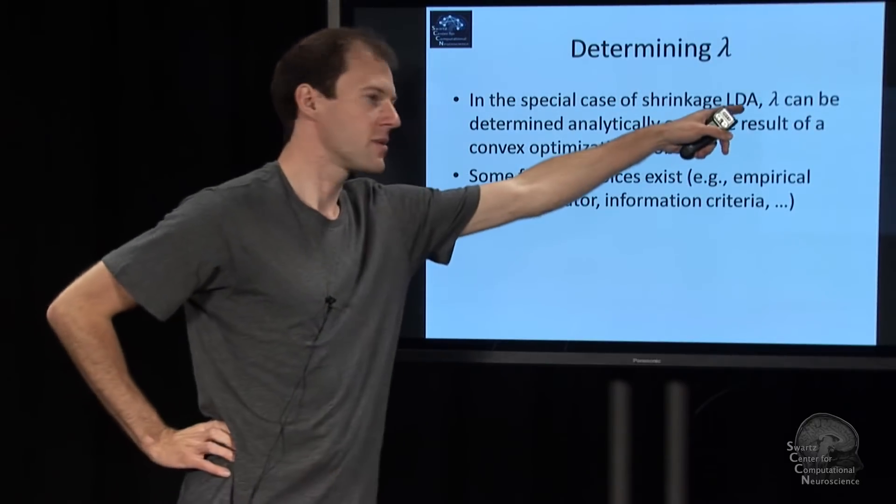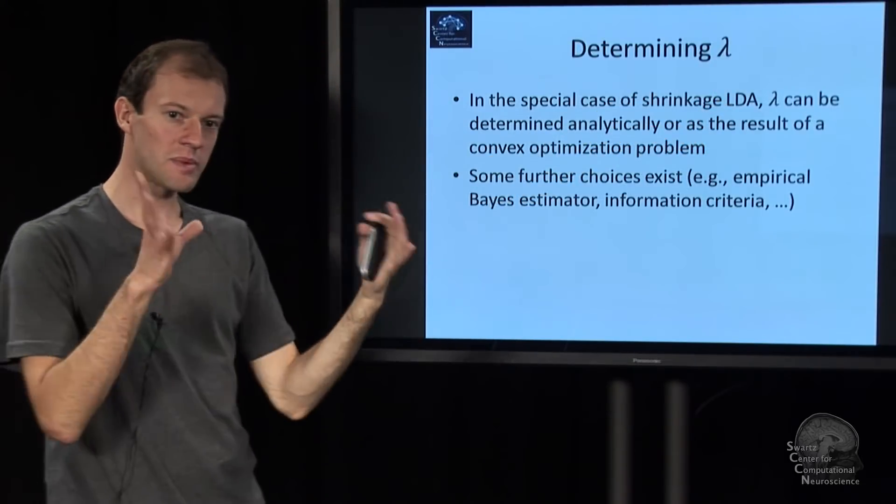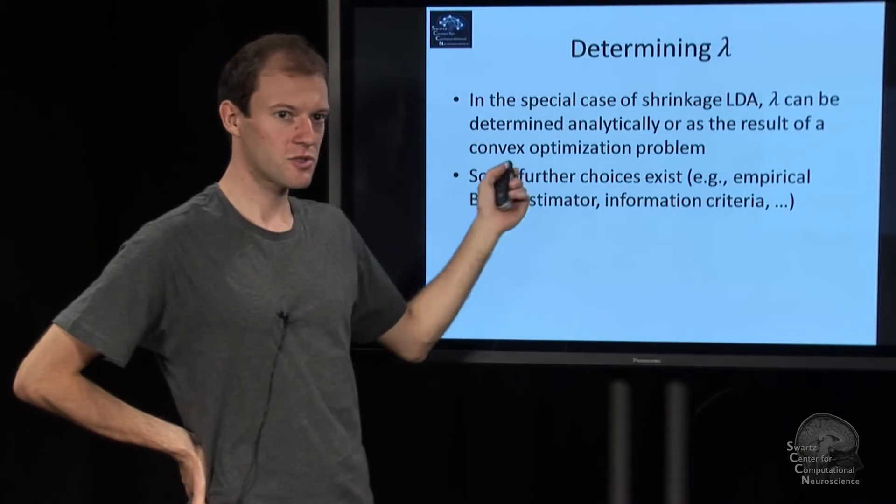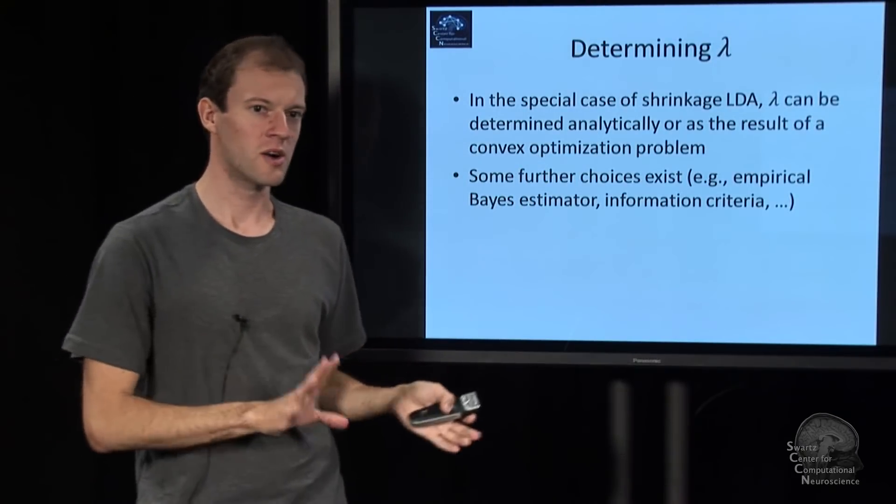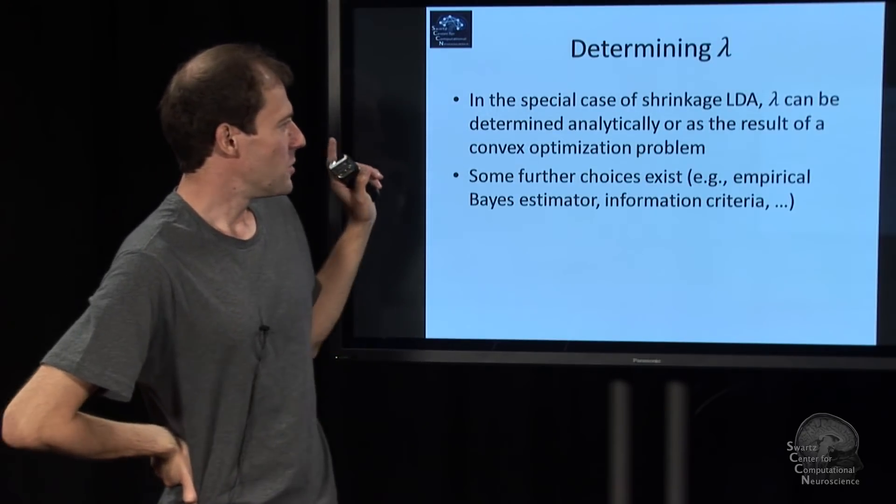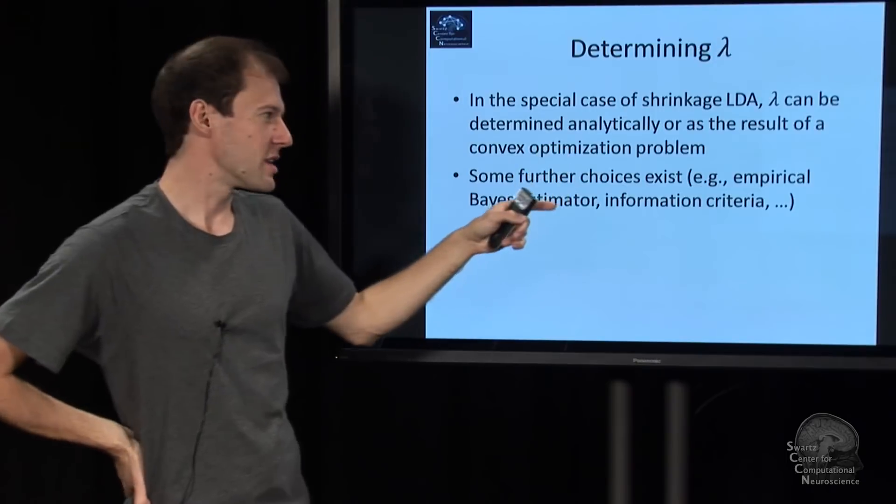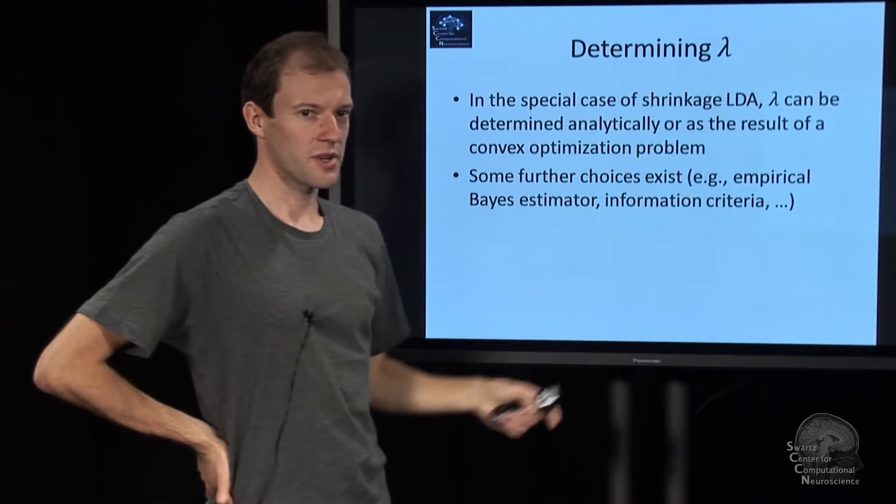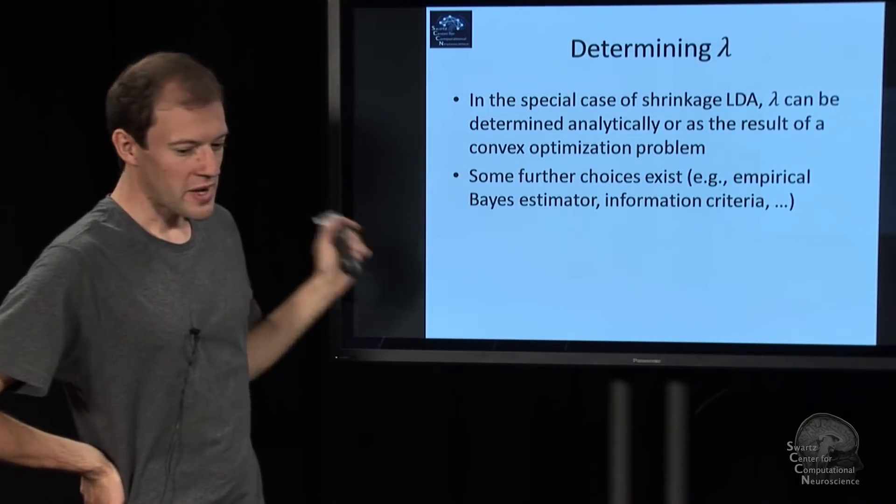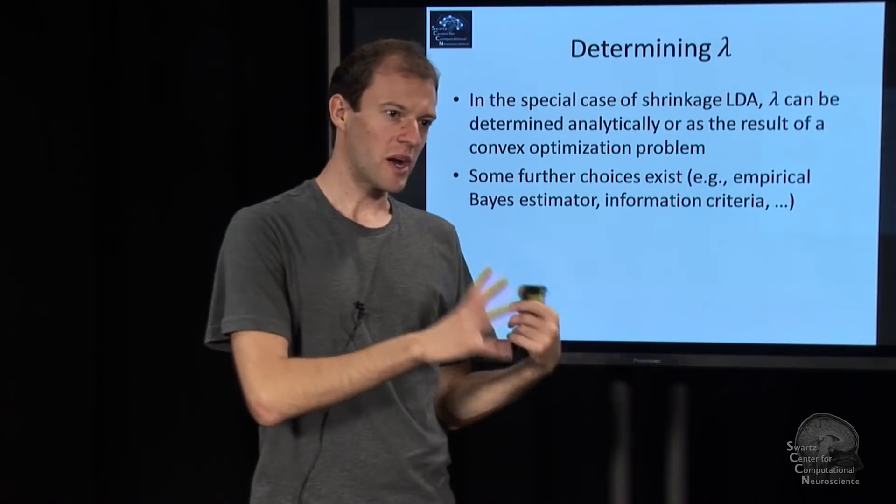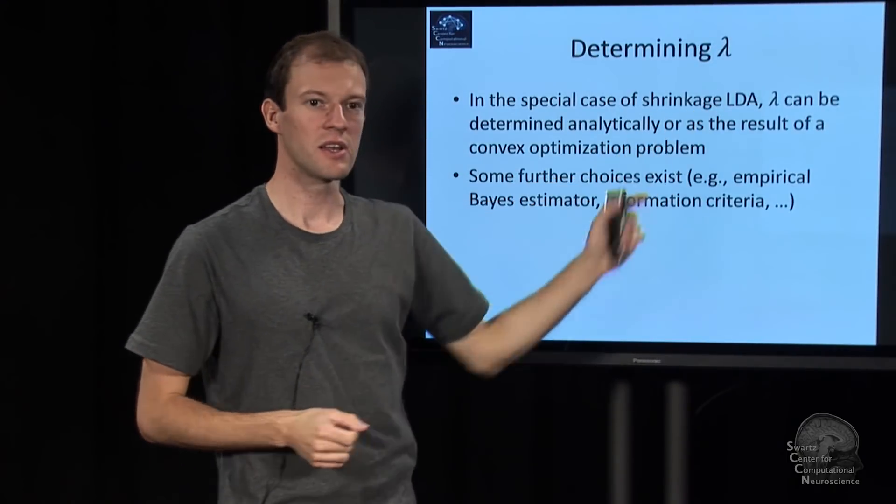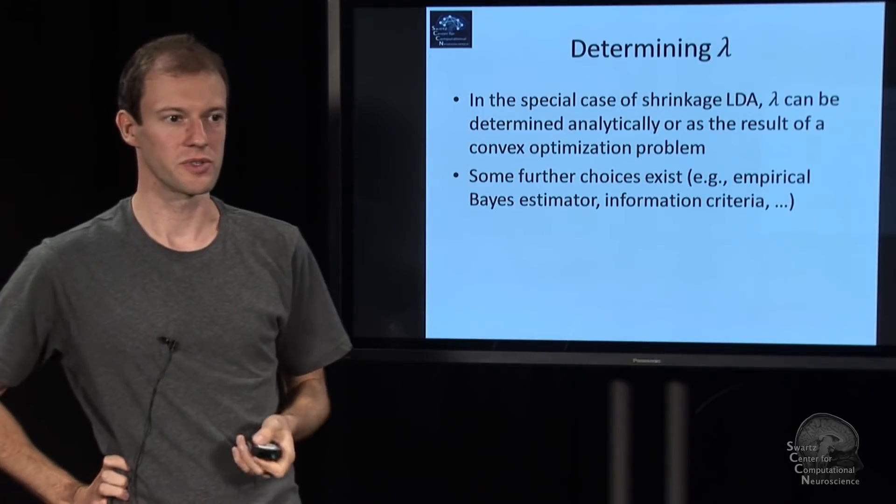So in the special case of LDA, there is actually an equation to calculate this lambda. It's pretty complicated, makes some assumptions. It's an analytic solution that amounts to some kind of least squares assumption, convex optimization. You can find this on the internet for shrinkage LDA or analytical shrinkage LDA. It's also implemented in BCILAB. But fundamentally, there's this way of cross-validating in many cases, and in some cases you're lucky enough to have an analytical expression for this parameter.